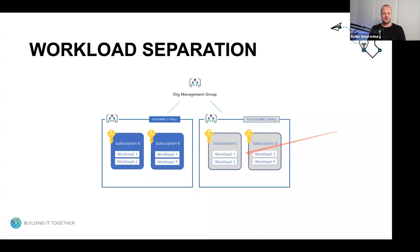Design strategies — the first one is workload separation. This is the most straightforward approach. You have two management groups: one for production and one for pre-production — like acceptance, test, staging, whatever. Both management groups contain multiple subscriptions where ownership or responsibility is the differentiator.